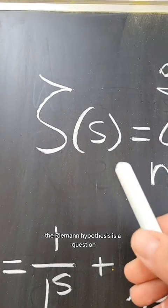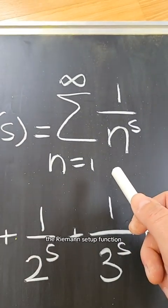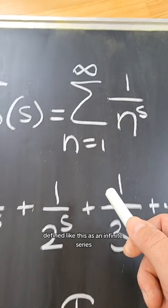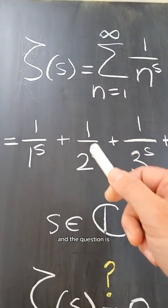The Riemann hypothesis is a question, a conjecture, about the Riemann zeta function. The Riemann zeta function, defined like this as an infinite series, is a function of complex values, and the question is,